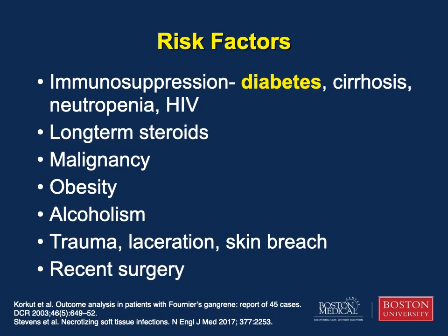Patients who develop necrotizing infections or Fournier's gangrene typically have risk factors. Immunosuppressed patients such as those with diabetes, cirrhosis, neutropenia, or HIV, a known malignancy, or long-term administration of corticosteroids all predispose a patient to developing such infections. Diabetes is especially implicated and is present in approximately 65 percent of affected patients. Other risk factors include penetrating trauma, a recent surgery, any skin or mucosal breach such as that from hemorrhoids, fissures, insect bites, or even an episiotomy.